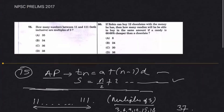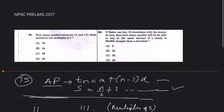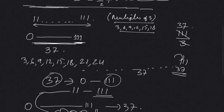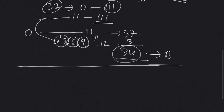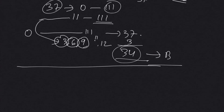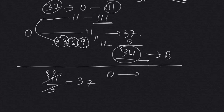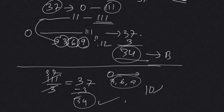See, in the exam you can solve it within 20 seconds — you just immediately read the question, then write: 111 divided by 3 equals 37, then 0 to 10 has 3 multiples (3, 6, 9), so 37 minus 3 equals 34. That's about 10 seconds. So this is how you solve the first question.